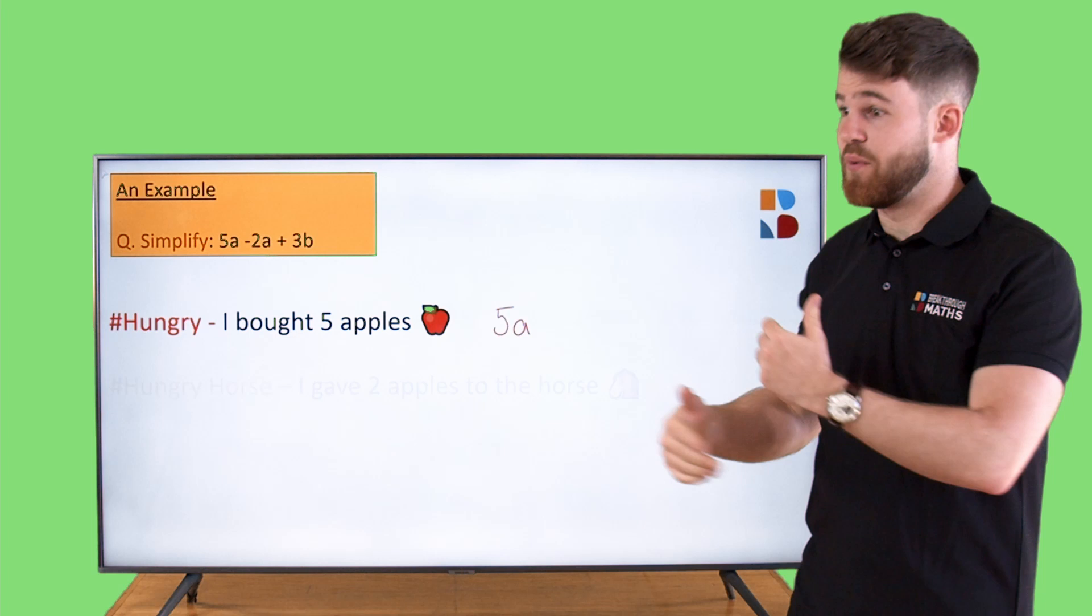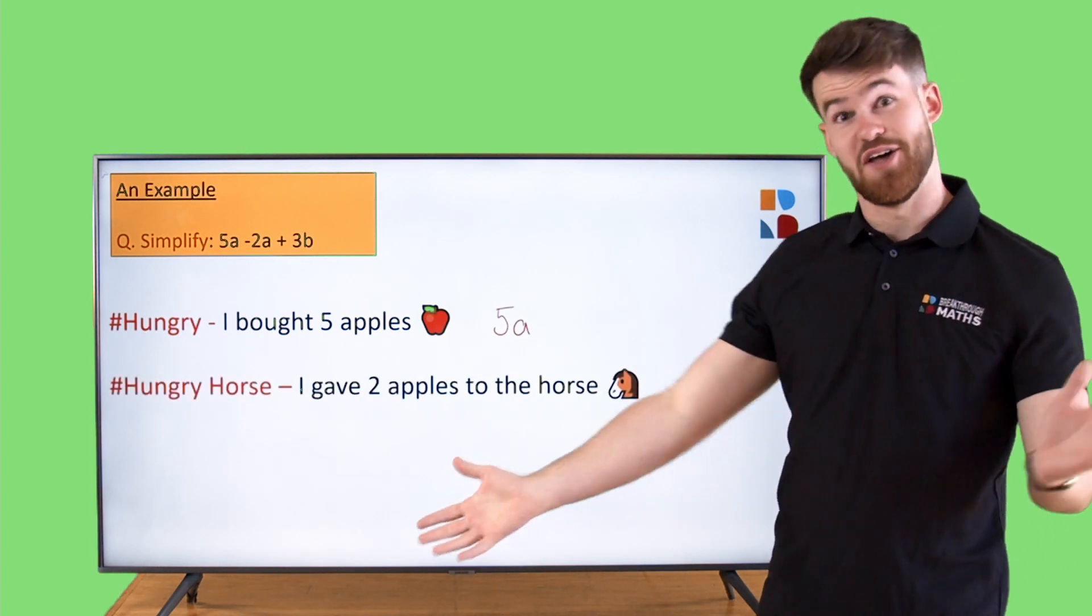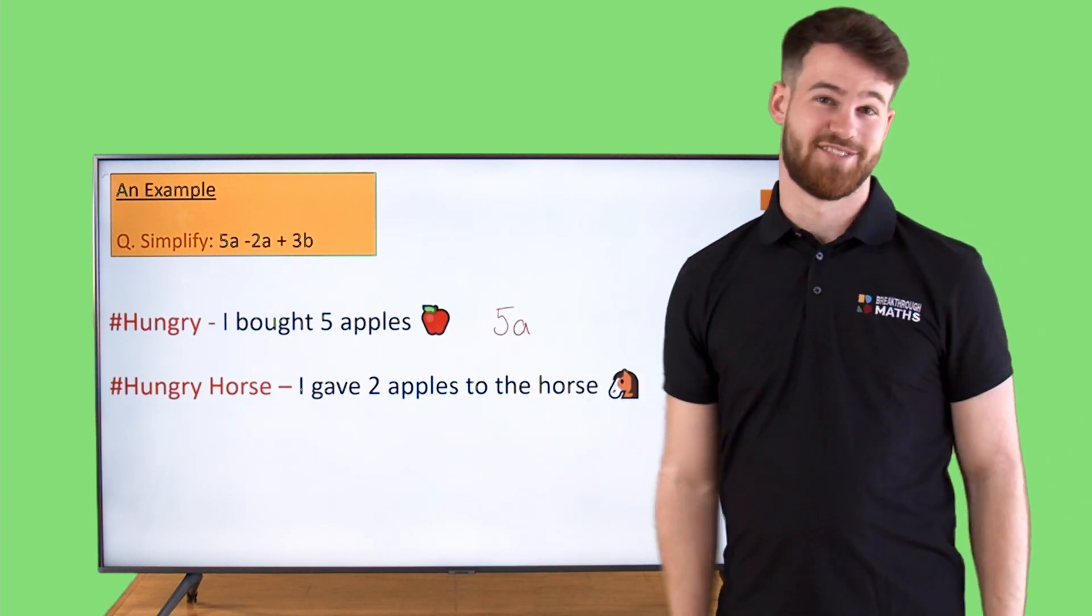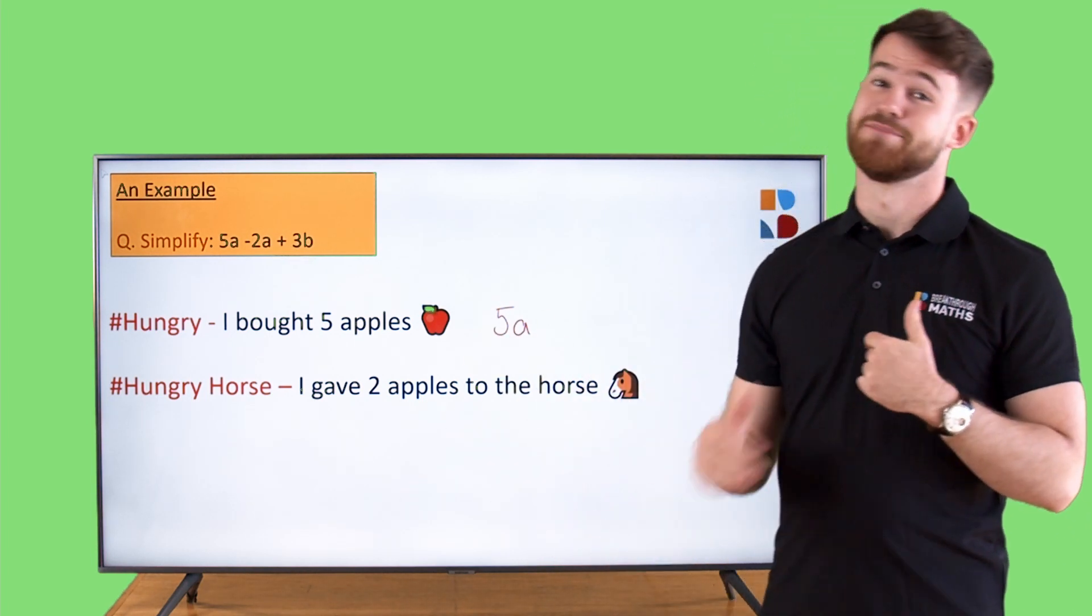Say then, along my way home from the shop, I bump into a lovely little horse. I'm feeling generous, so I give him two apples. That's the same thing as minus 2a.